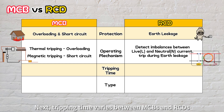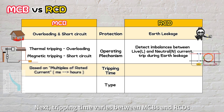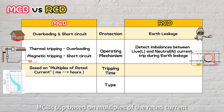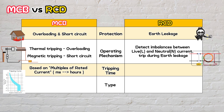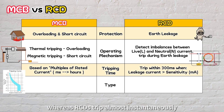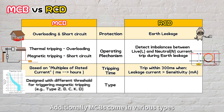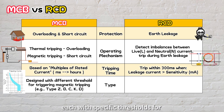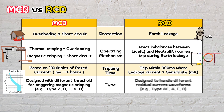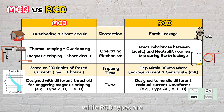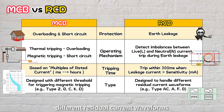Tripping time varies between MCBs and RCDs. MCBs trip based on multiples of the rated current, ranging from milliseconds to hours, whereas RCDs trip almost instantaneously, triggered when leakage current surpasses the sensitivity rating, typically within 300 milliseconds. Additionally, MCBs come in various types, each with specific thresholds for triggering magnetic tripping, while RCD types are designed to handle different residual current waveforms.